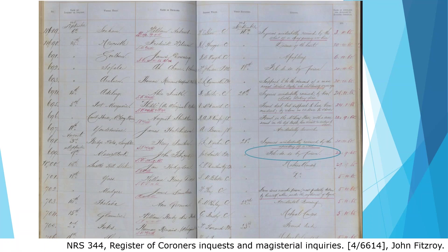What made this case interesting for the researcher was that John appears in the Register of Coroner's Inquest and Magisterial Inquiries on 9 September 1860 as having died — 'felo de se' by poison. Felo de se is Latin for a person who commits suicide or who dies of the effects of having committed an unlawful malicious act.